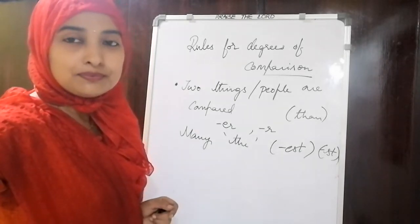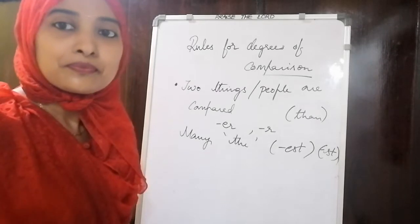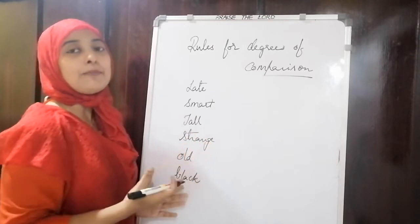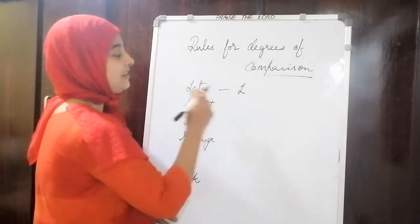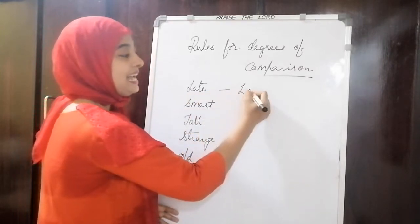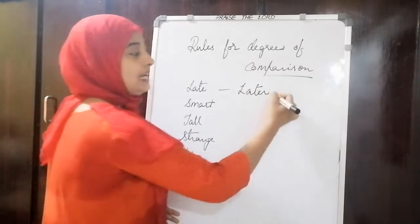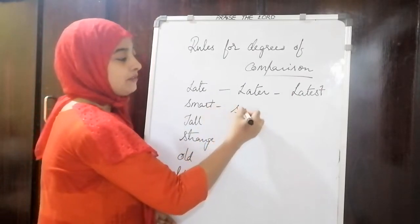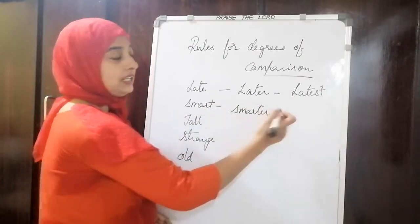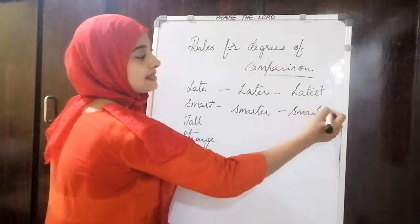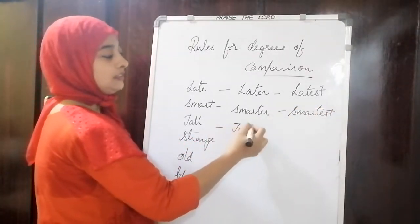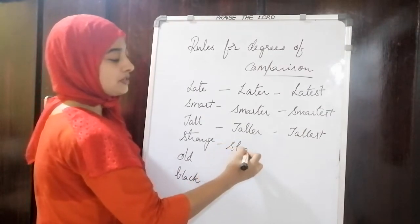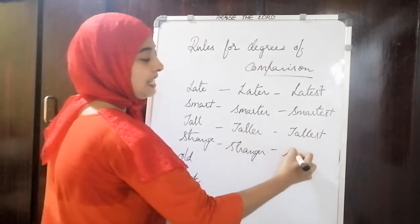Let us see a few words. When a word is ending with E, you won't add ER — you simply add R. So 'late' becomes 'later' and superlative becomes 'latest'. Similarly, 'smart' becomes 'smarter' — here we are adding ER — and 'smartest'. 'Tall' becomes 'taller' and 'tallest'.